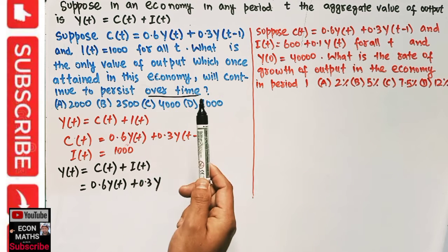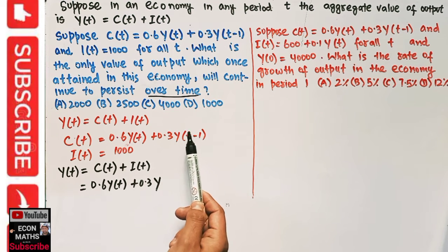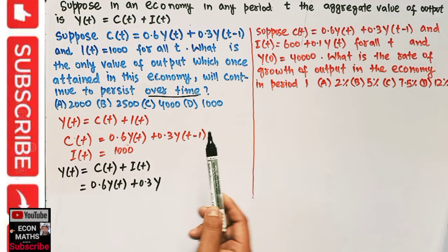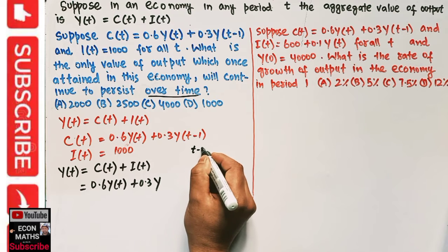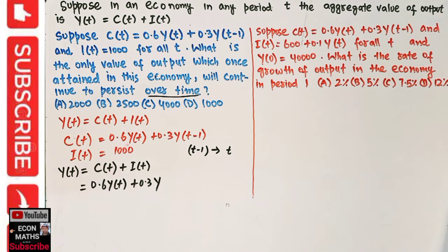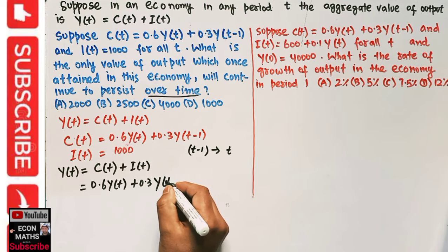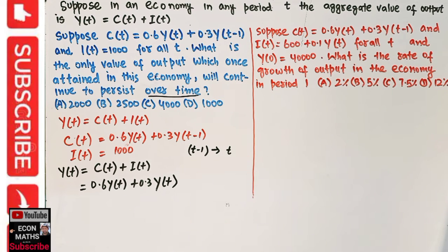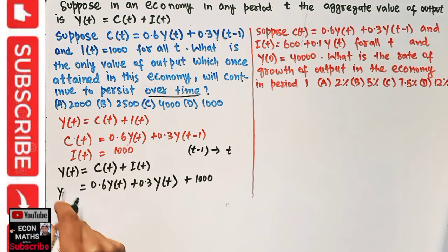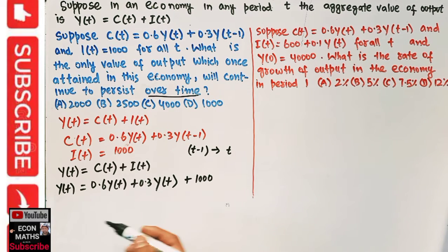In the long run, time is enough for consumers to adjust completely to changes in income, meaning we will not have any output lag in the consumption function. In the long run, Y(t-1) tends to Yt, so the long-run consumption becomes 0.6Yt + 0.3Yt, plus the investment function which is 1000. Now solving for Yt.